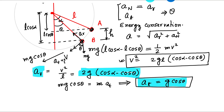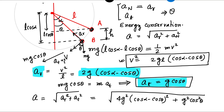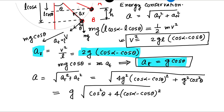Now we can calculate the resultant total acceleration, which is the square root of (radial acceleration)² plus (tangential acceleration)². The radial acceleration is 2g(cos alpha minus cos theta), so its square is 4g²(cos alpha minus cos theta)². The tangential acceleration squared is g² cos²theta. Taking g outside, the total acceleration equals g times the square root of cos²theta plus 4(cos alpha minus cos theta)².